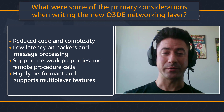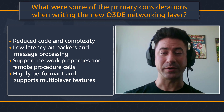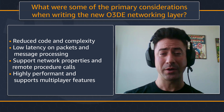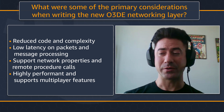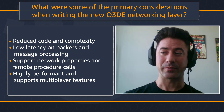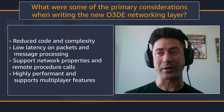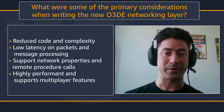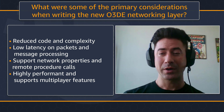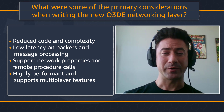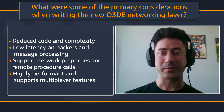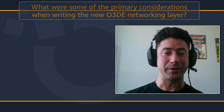We also wanted to go fully server authoritative with local prediction and backward reconciliation on the server — that's for anti-cheat. We supported the two major forms of entity-based networking: network properties and remote procedure calls. The overall solution is pretty performant and it supports all the modern multiplayer features that we need.